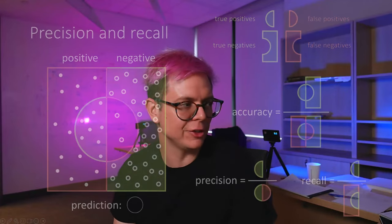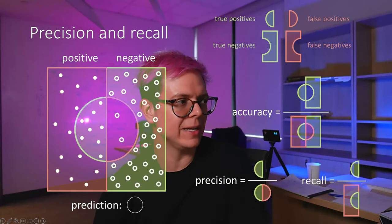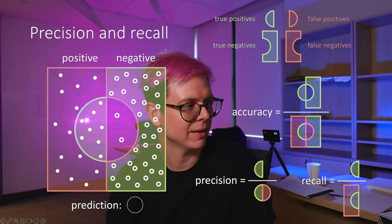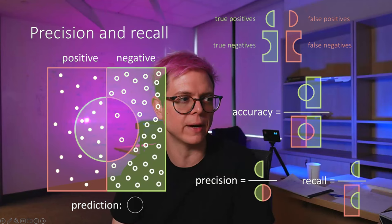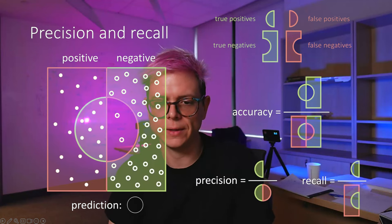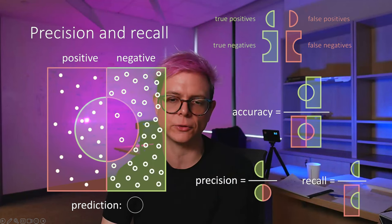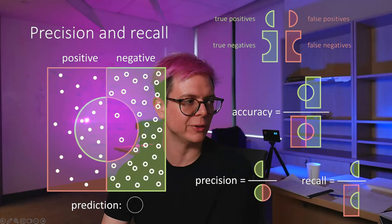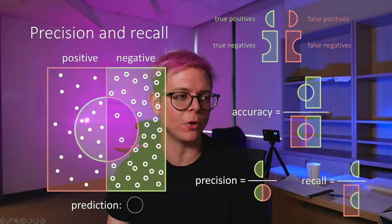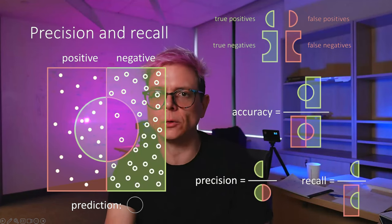Let me explain how this works with an analogy. Imagine you're a detective investigating a case and your goal is to catch all the criminals — the positives — involved in a series of robberies. Precision tells you how many of the identified suspects are actual criminals. If you identify 10 suspects as criminals and you were correct about 8 of them, your precision is 80%. Recall tells you how many of the actual criminals you managed to catch. Suppose there were 20 criminals involved in the robberies but you only managed to catch 8 — your recall would be 8 out of 20, or 40%.